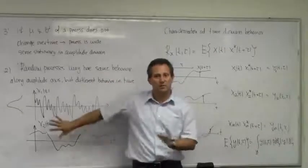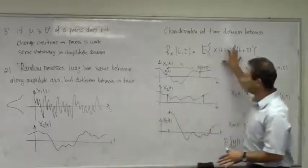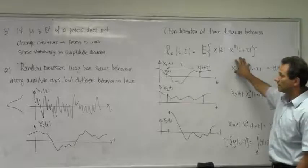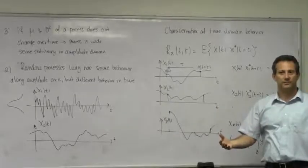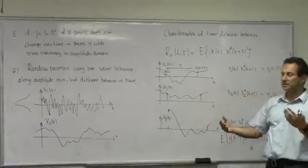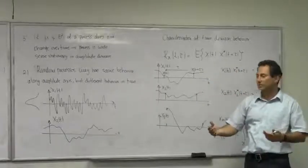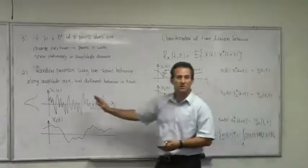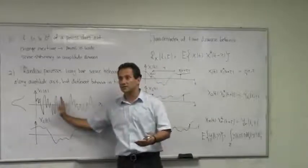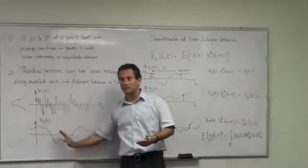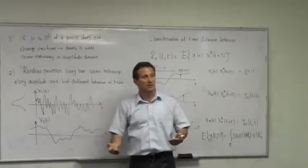We're going to go through this in more detail, but for right now understand what it is. Now we can define based on the autocorrelation function two classes of signals. If this autocorrelation function does not depend on t, in other words it only depends on τ, then the process is stationary.